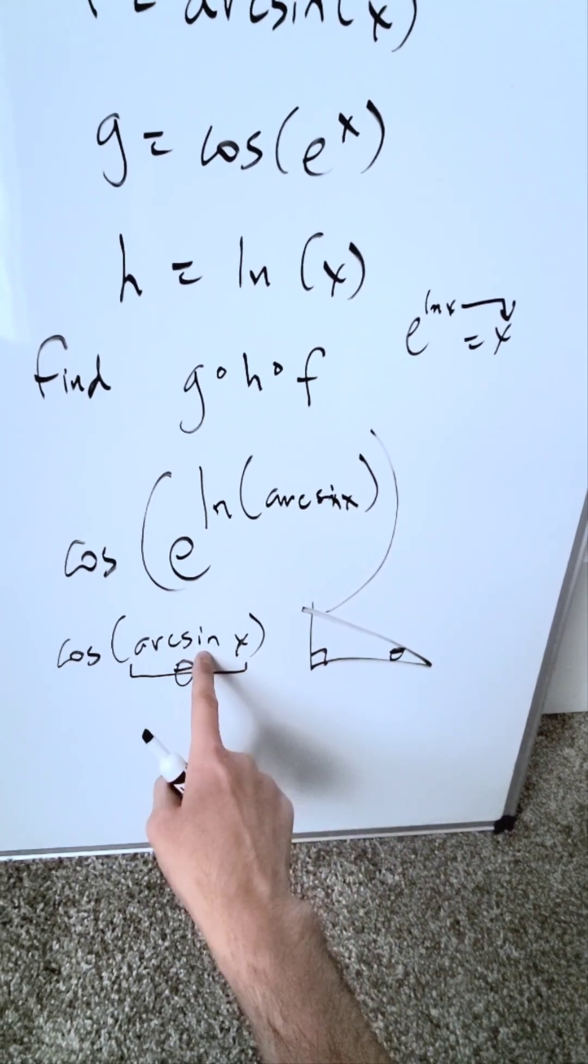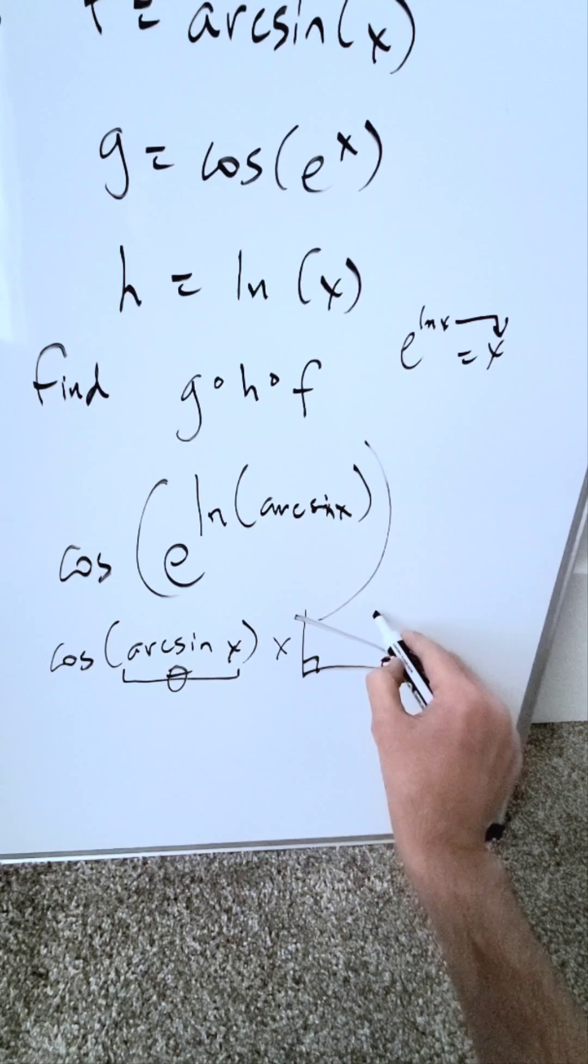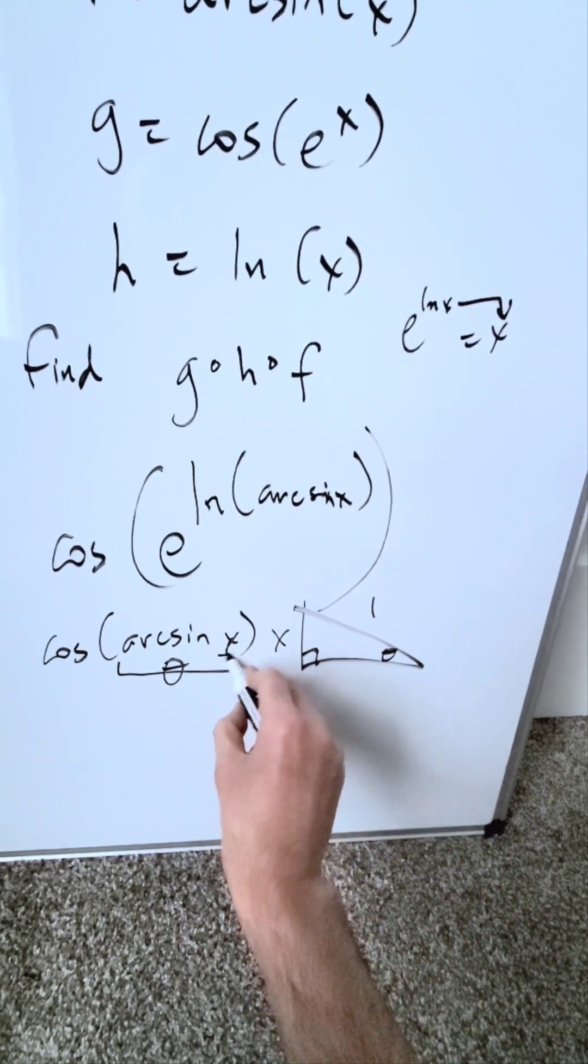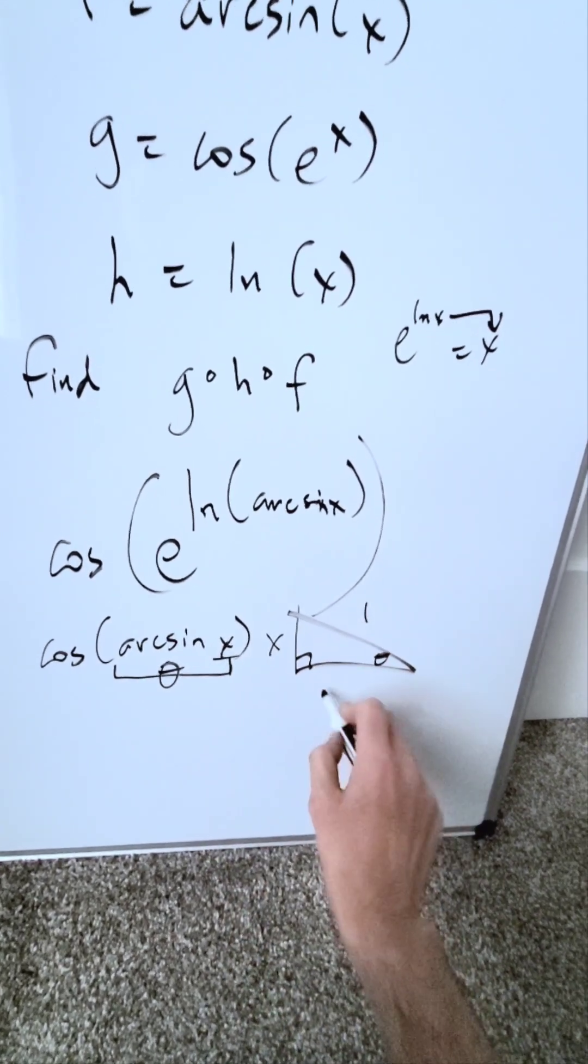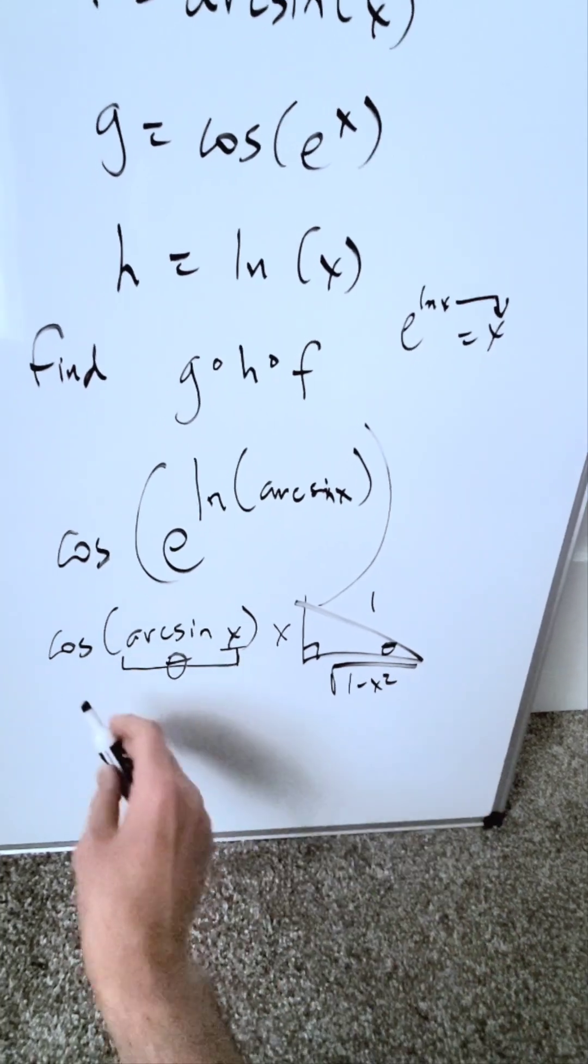Based on the definition, sine equals opposite over hypotenuse. The hypotenuse is 1, and the opposite is x. The third side, the adjacent, will be sqrt(1 - x²).